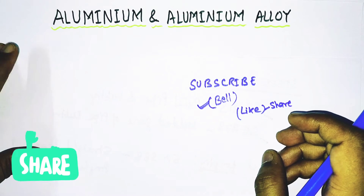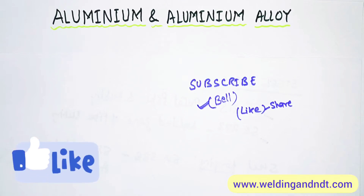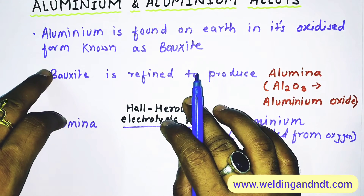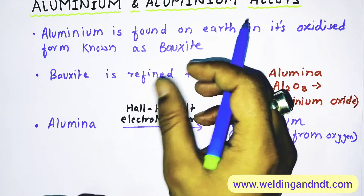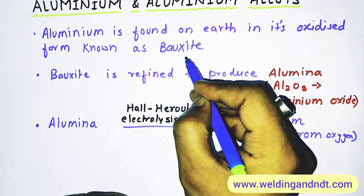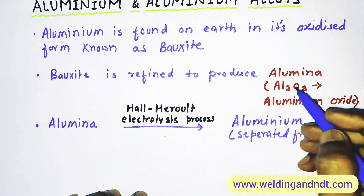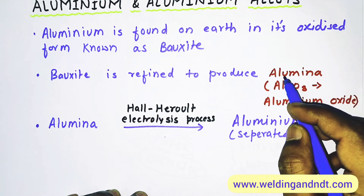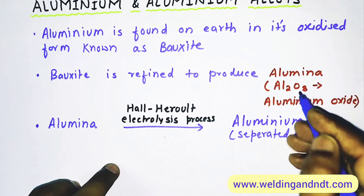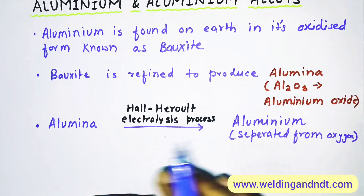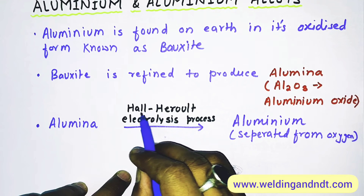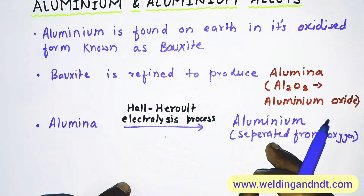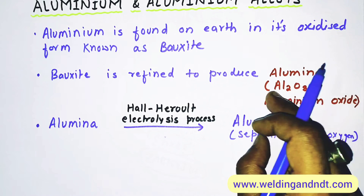Aluminum is found on earth in its oxidized form known as bauxite. Aluminum is present on earth in plenty in the form of bauxite. This bauxite is refined to produce alumina — alumina is aluminum oxide, also known as Al2O3. We separate oxygen from alumina to get pure aluminum with the help of the electrolysis process, also known as the Hall-Héroult electrolysis process, which dissociates oxygen atoms from alumina.